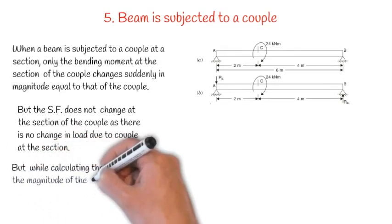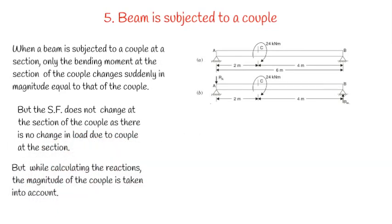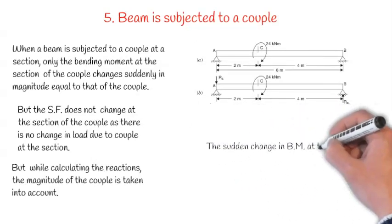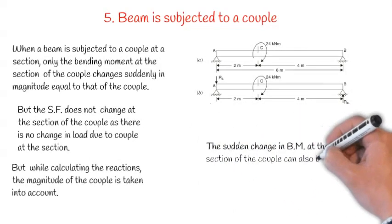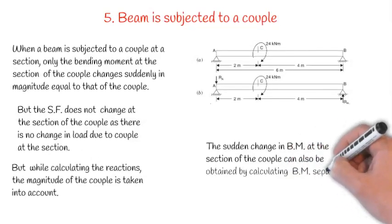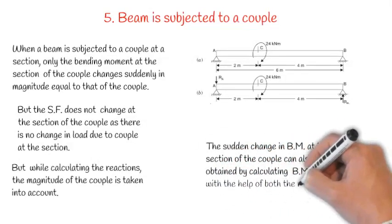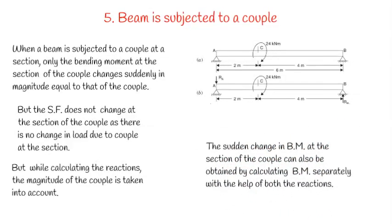While calculating the reactions, the magnitude of the couple is taken into account. The sudden change in bending moment at the section of the couple can also be obtained by calculating bending moment separately with the help of both the reactions.